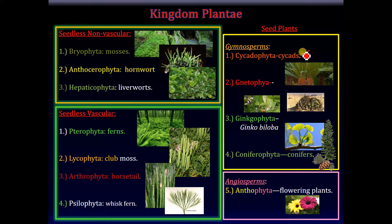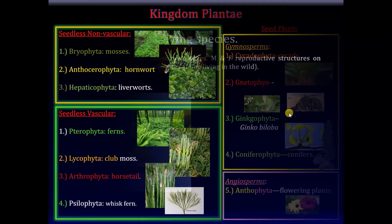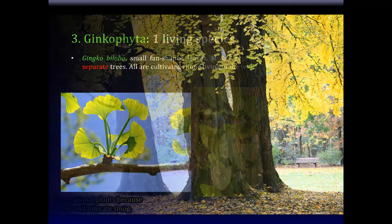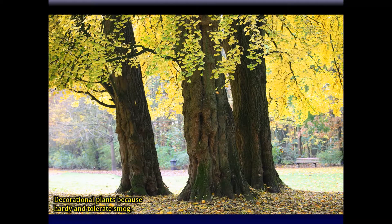So far we have talked about the cycads and the Gnetophyta, and now we shall talk about my favorite plants, the Ginkgophyta, or the ginkgo biloba. There is only one living species of these. It has very beautiful fan-shaped leaves, and in these plants also the male and female reproductive structures are on separate trees. All of these plants are now cultivated — none of them are living in the wild. They're frequently used as ornamental plants because they're hardy and tolerate smog and city pollution. Quite beautiful.